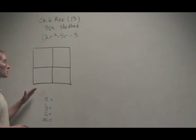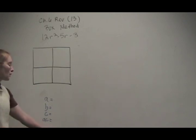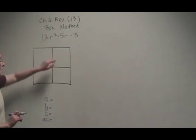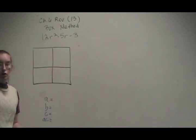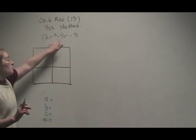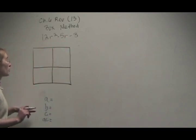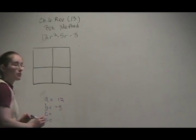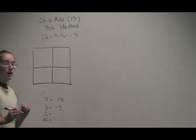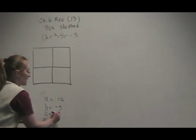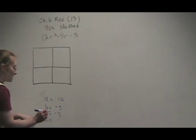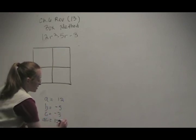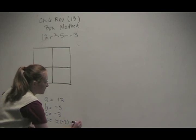The first thing for the box method that you're going to want to do is fill in these terms. And if you look at the generic trinomial A, B, and C, so what I'm going to do is pull those down here. So this is 12, this is negative 5. Remember, you need to take the negative signs, and negative 3. And then we want AC. So 12 times negative 3 is negative 36.